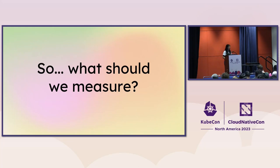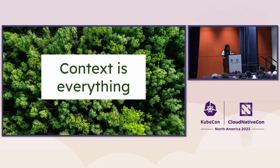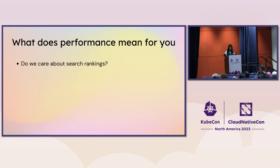So that brings us to the question: what should we measure? Spoiler alert — it depends, and context is everything. The context of your website or application is really important to determine what your web performance goals are. The first question to ask is: do we care about search rankings? If you're an e-commerce or marketing website, you do care about those absolute values that Google has set, and those might be your baselines.